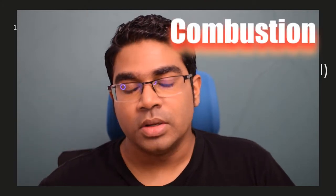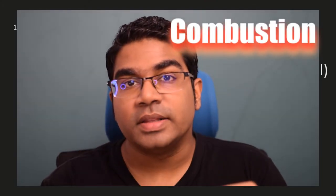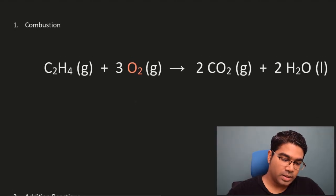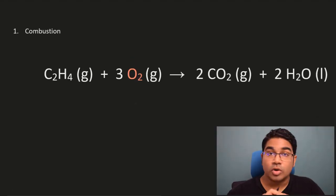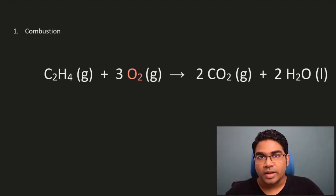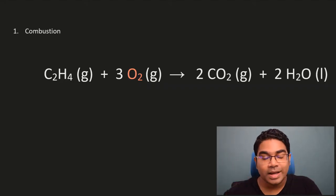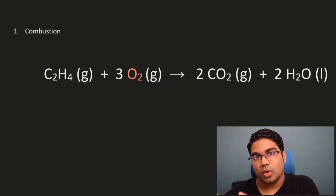So as a hydrocarbon, alkenes can undergo combustion. The combustibility of alkenes will decrease as the length of the chain increases — as it becomes bigger and bigger, the combustibility will decrease. So when alkenes undergo combustion, just like all hydrocarbons, they will produce only carbon dioxide and water.